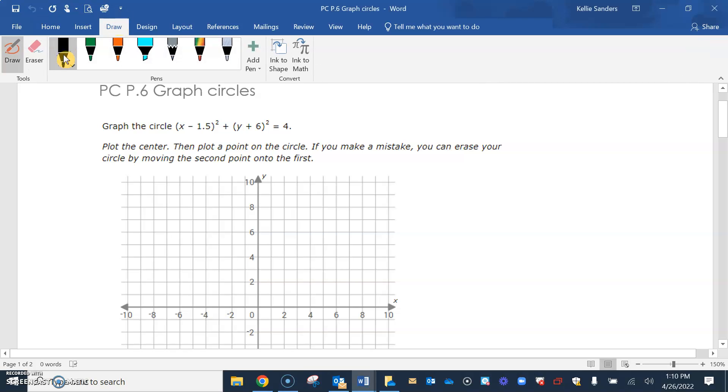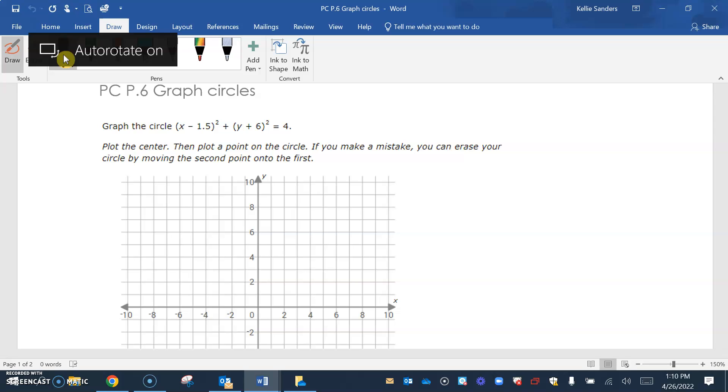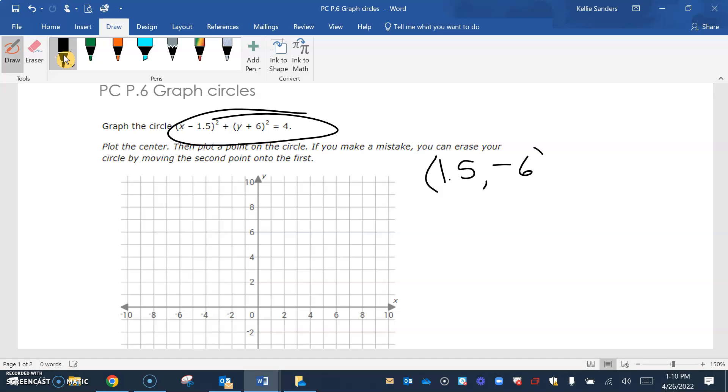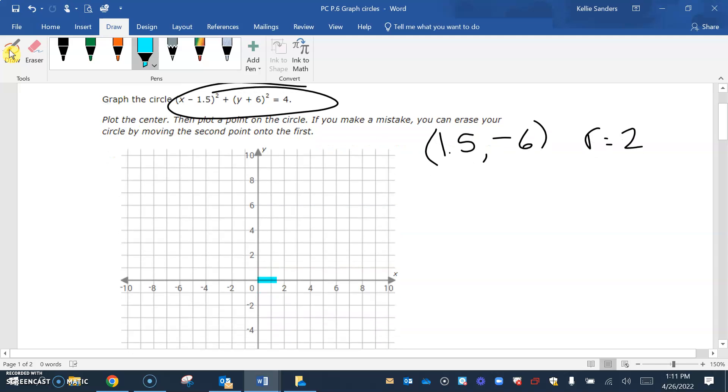Now we're going to graph them. We have it in standard form, and don't forget your H and K. Your H is a positive 1.5 and your K is negative 6, and your radius is 2. So we're going to go one and a half to the right and then six down.